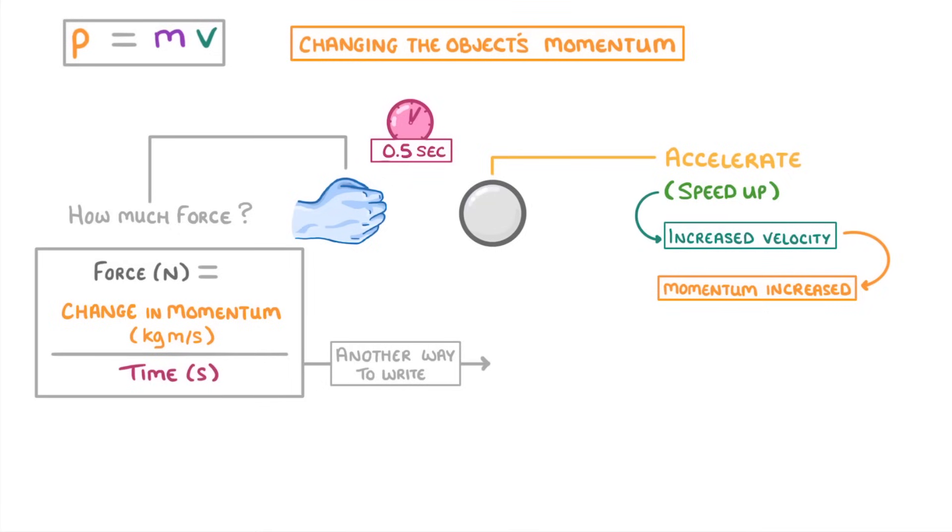Another way to write this equation is where mv is the final momentum and mu is the initial momentum, because v and u are the final and initial velocities of the object.